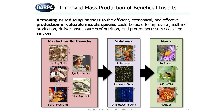There are a lot of bottlenecks in the production system that we currently have. Some of these might be the feeding media and the development of what the insects will use as their nutritional source to be raised in a large setting. Also, the labor costs associated with moving insects, removing dead insects, and harvesting the products from these systems — the post-processing.